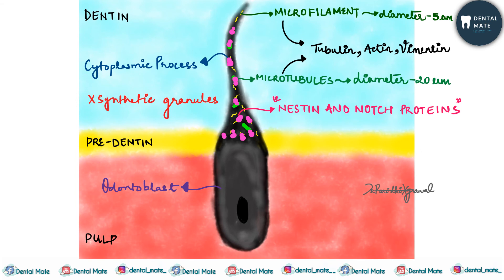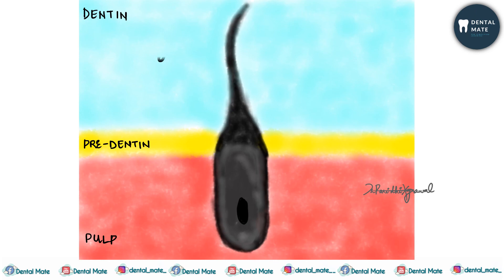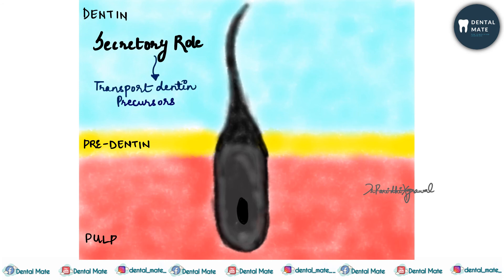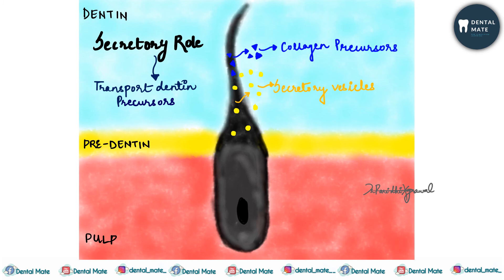The odontoblastic process does not contain synthetic granules. The structural component of the odontoblastic process reflects its secretory role. The principal activity is transport of dentine precursors: secretory vesicles are transported and released into the extracellular space, collagen precursors are secreted and released, and there is also a role in initiating the process of calcification, transporting calcium, and modification of the matrix composition.